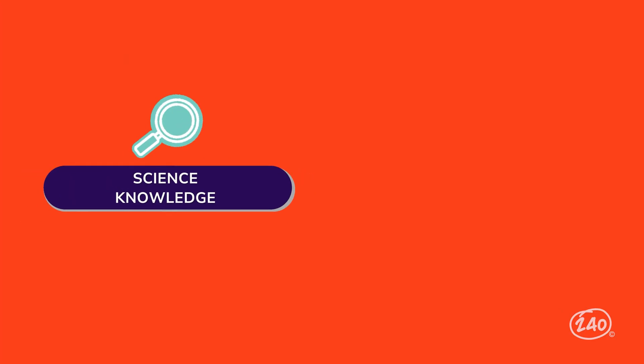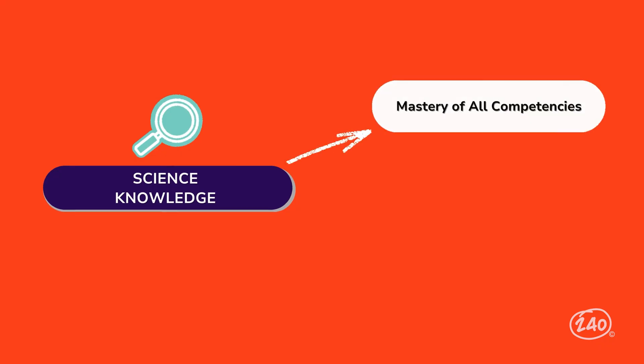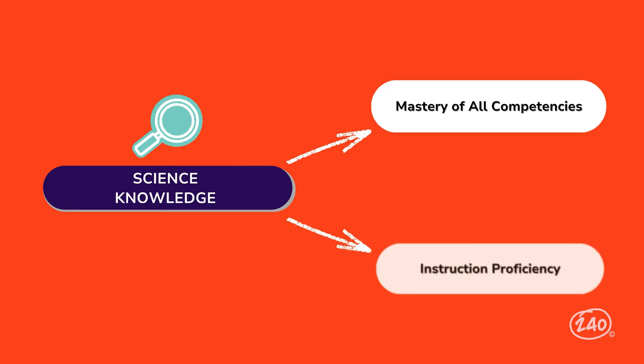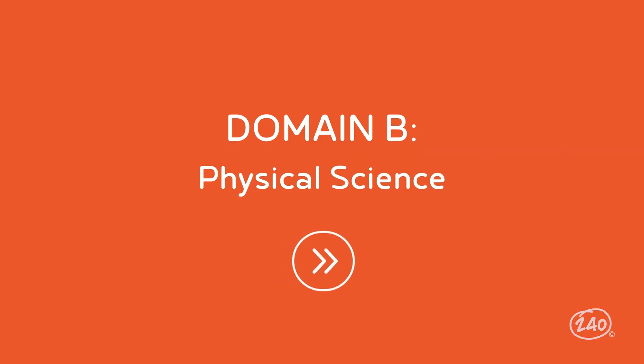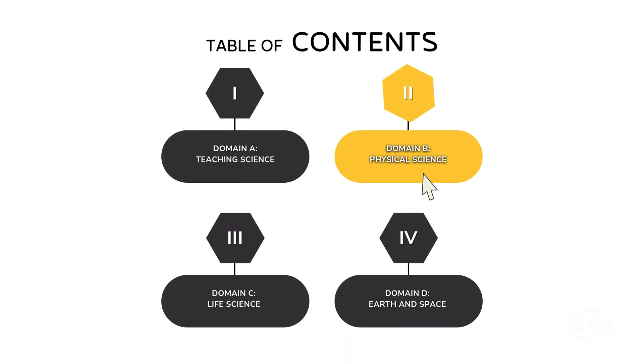Before we leave Domain A, here's one last tip. Since your science knowledge will help you answer these questions, we recommend studying for the other competencies first. For example, you may be asked what resource to use to teach a certain topic or which technology fits with a particular concept. The more you know about those, the easier it will be to pick out the best choice to teach it. We made it through the first domain — and that was the only one focused on teaching. The rest are all subject matter content.